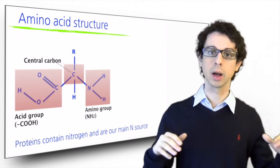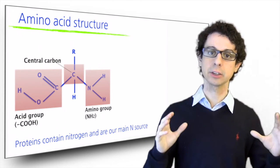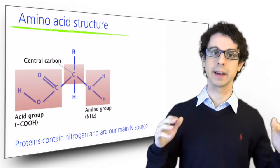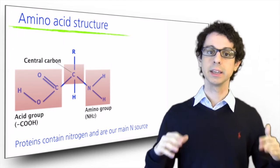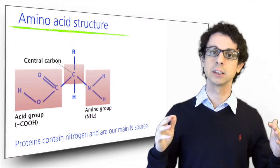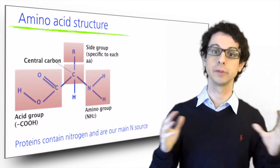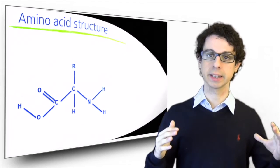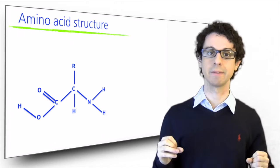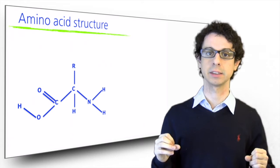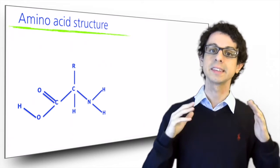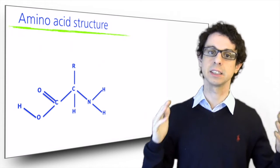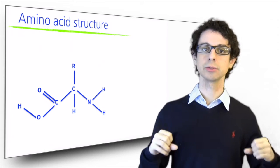The fourth group, bound to the central atom of carbon, that we indicate here with the letter R, is called the side group of the amino acid, and it's variable. The bottom part is always the same for every amino acid, while the side group changes, and it's what defines each of the 20 amino acids.